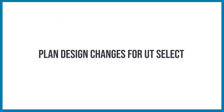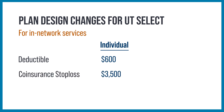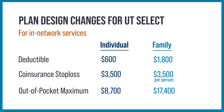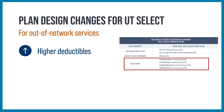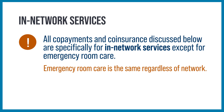Plan Design Changes for UT Select: For an individual using in-network services, the deductible is now $600, the coinsurance stop loss is $3,500, and the out-of-pocket maximum is $8,700. For a family using in-network services, the deductible is $1,800, the coinsurance stop loss is $3,500 per person, and the out-of-pocket maximum is $17,400. Out-of-network deductibles are higher and continue to have no out-of-pocket maximum. All co-payments and coinsurance discussed below are specifically for in-network services except for emergency room care, which is the same regardless of network.